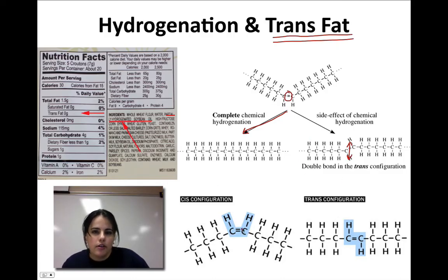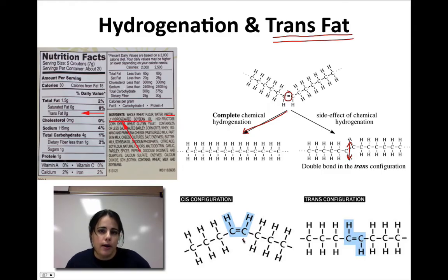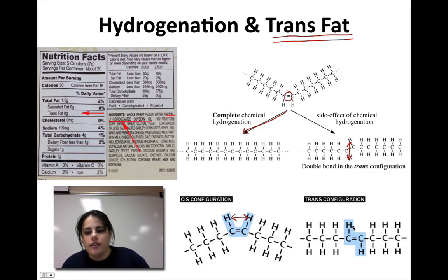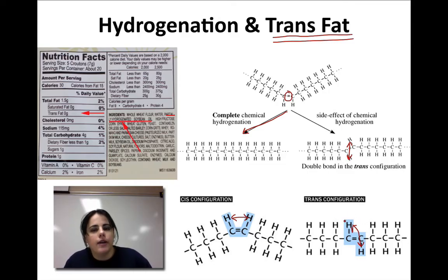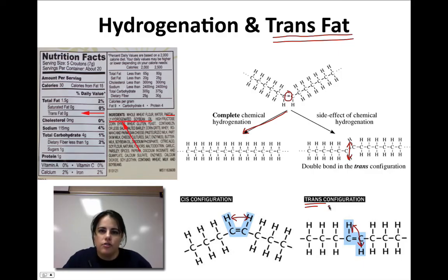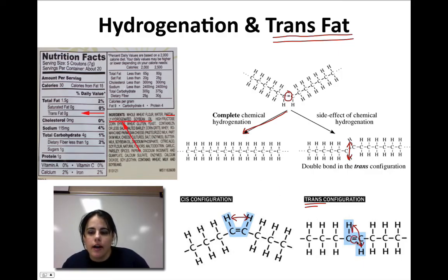If the hydrogens are on the same side, we call it cis — cis means 'same.' A cis fat is healthy and is one you want in your body. In a trans fat, the hydrogens are on opposite sides instead. Why is that bad? Because it gives the fat a straight structure — very bent in cis, very straight in trans. Trans mimics saturation, and it still has that double bond, making it even harder for your body to break down.